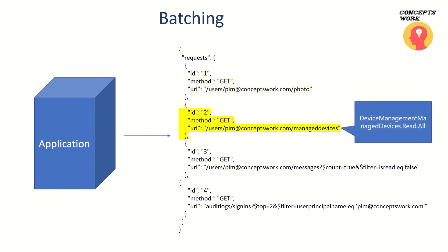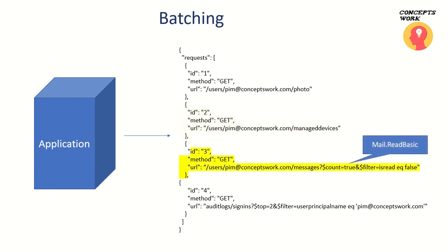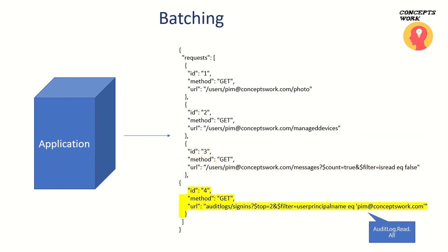The second segment, querying managed devices, requires the DeviceManagementManagedDevices.Read.All permission. The third segment requires the privilege to access emails of the particular user, which will be Mail.ReadBasic. And the last one is related to audit logs generated by Azure Active Directory. Now let's see how we can generate the structure for these queries.